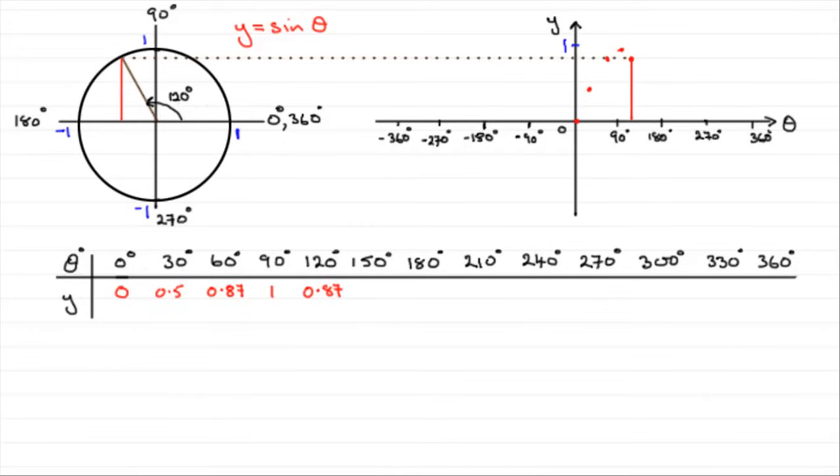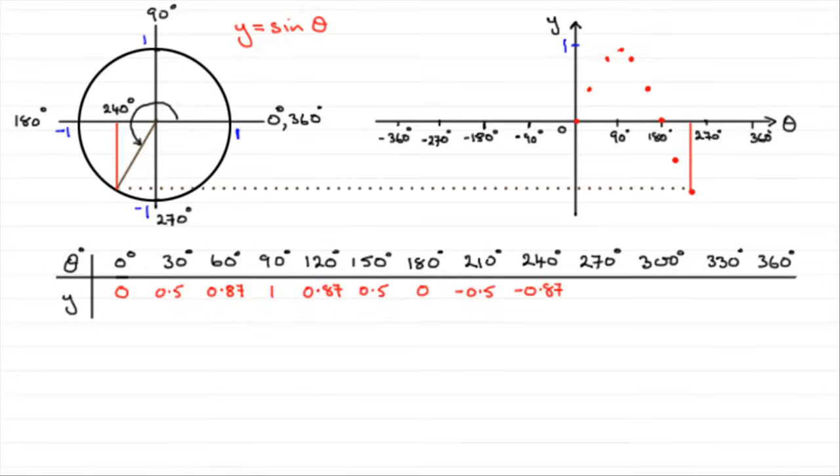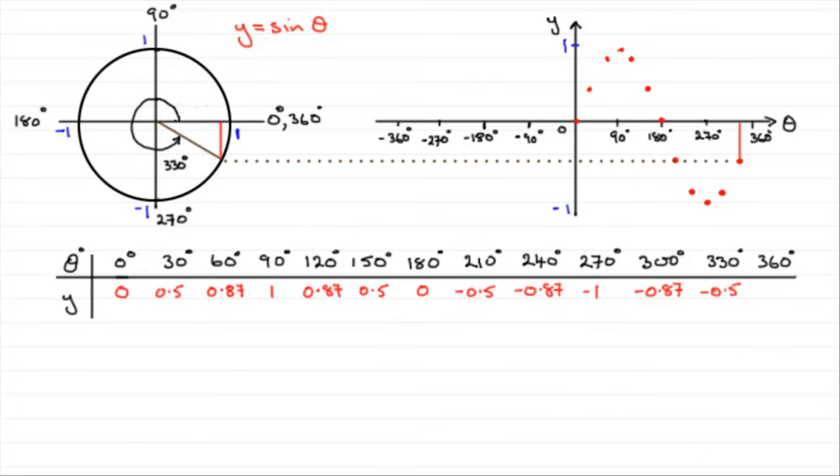Moving on to 120 degrees, the displacement starts to decrease. You can see what we get for 150 and 180 degrees. As we go round, we start to get negative displacements at 210 degrees, 240 degrees, until we get to 270 degrees, which gives us our lowest point at minus 1. As we work our way to 300 degrees we get minus 0.87, 330 degrees minus 0.5, and at 360 degrees we're back to 0.